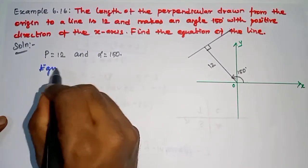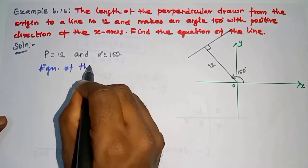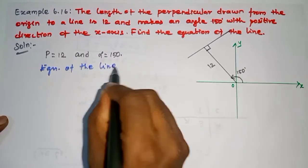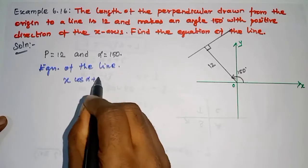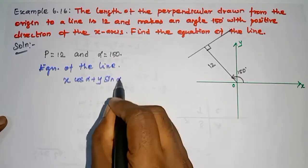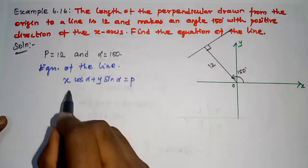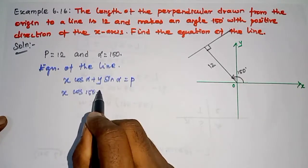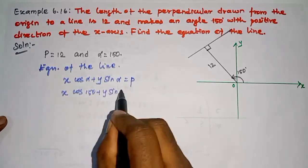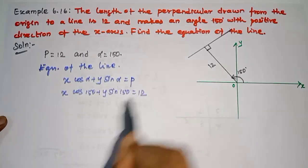For the equation of the line, the general concept is x cos alpha plus y sin alpha is equal to p. So, x cos of 150 plus y sin of 150 is equal to 12.